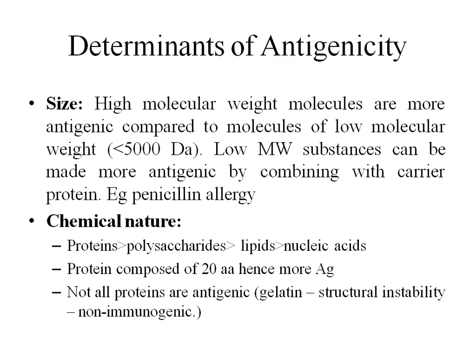Now we will see the determinants of antigenicity. The size of an antigen is very important — if we have a very low molecular weight substance, it acts as a hapten rather than an antigen. High molecular weight molecules are more antigenic compared to low molecular weight molecules. Low molecular weight molecules can be made antigenic by attaching them to a carrier protein.